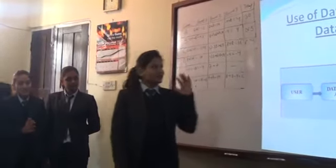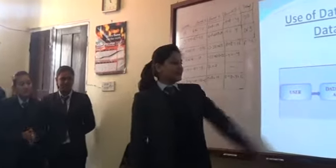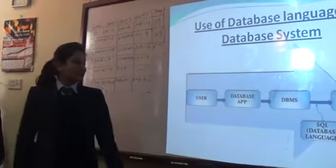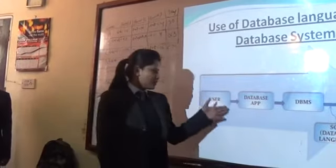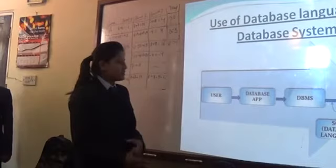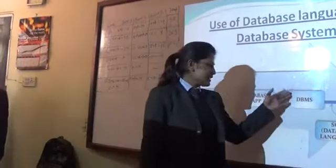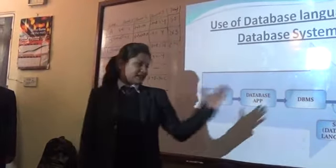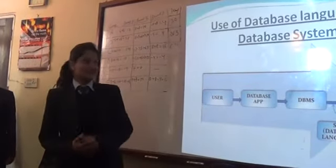How is the database language used in the database systems? You can see the user, database application, DBMS, and DBMS database systems. In the DBMS, first the data is sent by the users, then it goes to the database application. The database application provides the data to DBMS, and those data are converted into SQL language. Then the whole process of the DBMS system is complete.